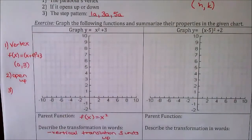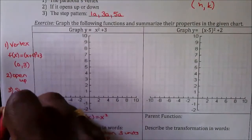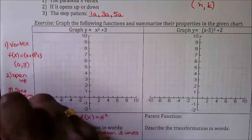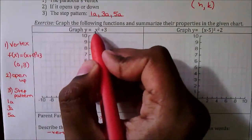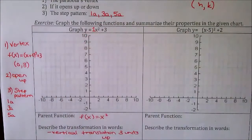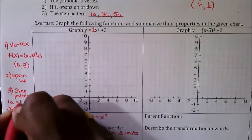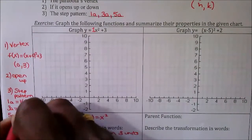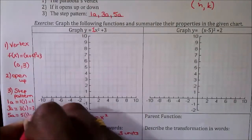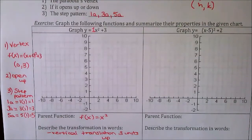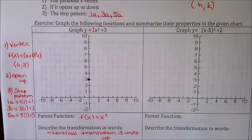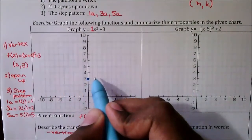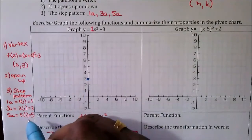Lastly, we determine the step pattern, which is always 1a, 3a, and 5a. Looking at our equation, there is no a value written, so we assume a = 1. That gives us 1×1 = 1, 3×1 = 3, and 5×1 = 5. Using this information, we can now graph the parabola. We start with the vertex at (0, 3), and since it opens up, all our points will be in that region.